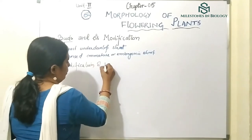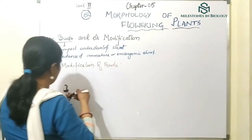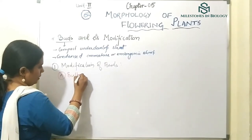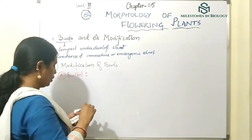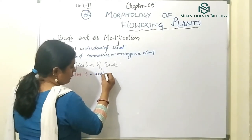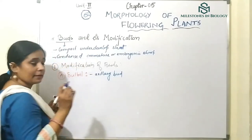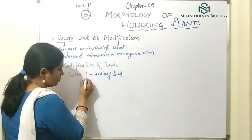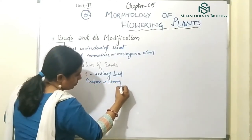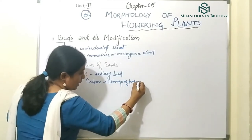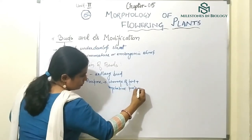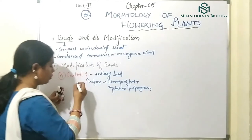The first modification is bulbils. Bulbils are a modification of the axillary bud, and this modification serves two purposes: storage of food and vegetative propagation.